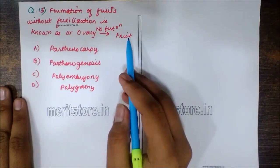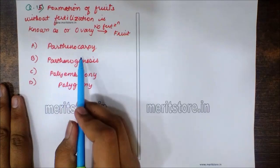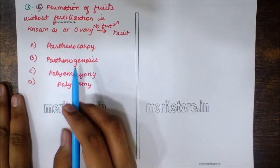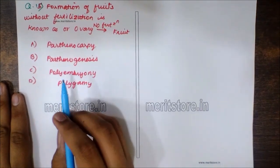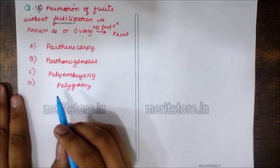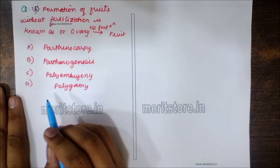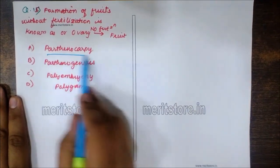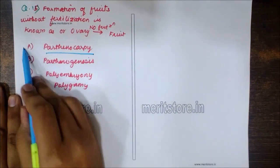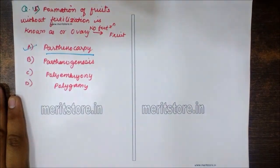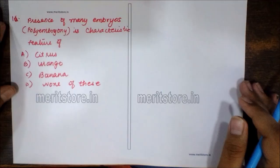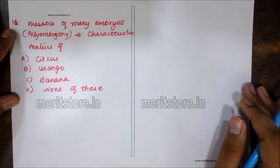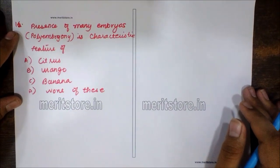Question 15: formation of fruits without fertilization is known as parthenocarpy. When seedless fruit varieties are produced by removal of pollination, the process is called parthenocarpy. Option A is the correct answer.